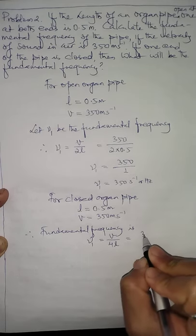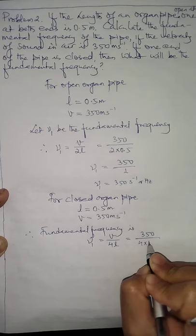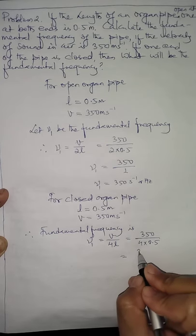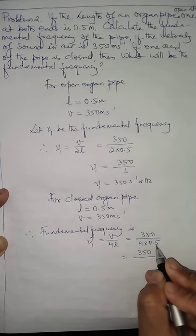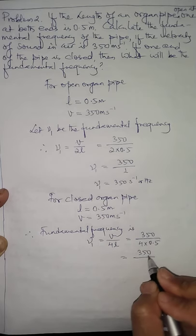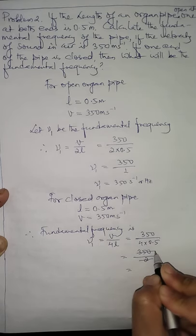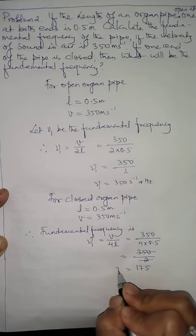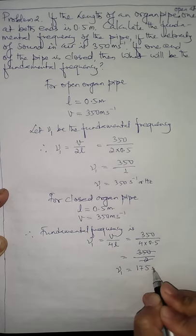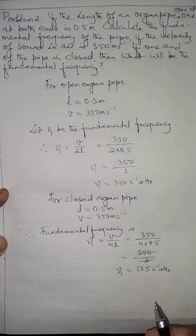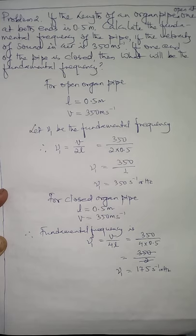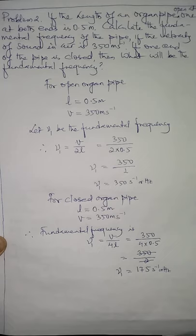Substituting the values: ν₁ = 350 / (4 × 0.5) = 350 / 2 = 175 per second, or 175 hertz. So the fundamental frequency of the closed organ pipe is 175 hertz. This completes the numerical based on both open and closed organ pipes.